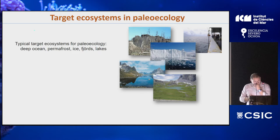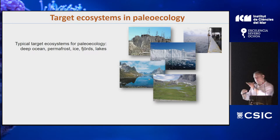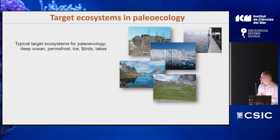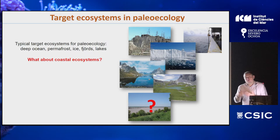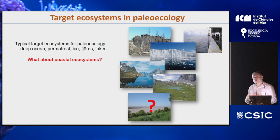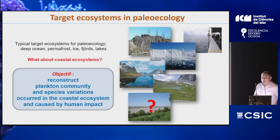Paleoecology has been mostly used in freshwater ecosystems — lakes, permafrost, and deep oceans — where sedimentations are quite stable, providing good archives of DNA and resting stages. For coastal ecosystems, this is much more complicated because of physical processes like waves, tides, and bioturbation by animals that can bias your archives. So the first challenge was whether we can use paleoecology in coastal ecosystems. The answer is yes, but it was quite challenging, and you will see how.